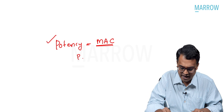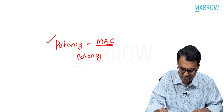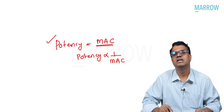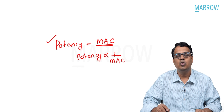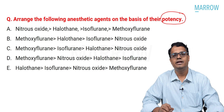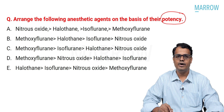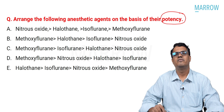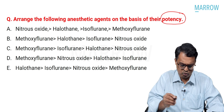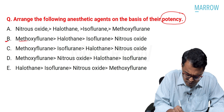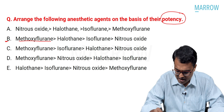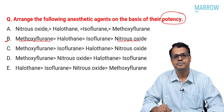If an agent is having high MAC, potency is inversely proportional to MAC. If an agent is having high MAC, that means it is least potent. If an agent is having low MAC, that means it is more potent. Out of all the options, methoxyflurane has the least MAC — meaning it is more potent — whereas nitrous oxide has the highest MAC, meaning it is the least potent.